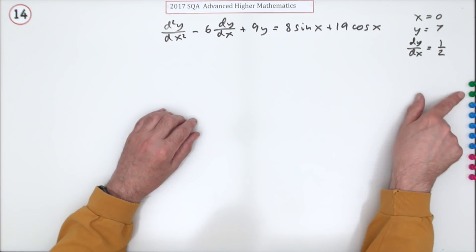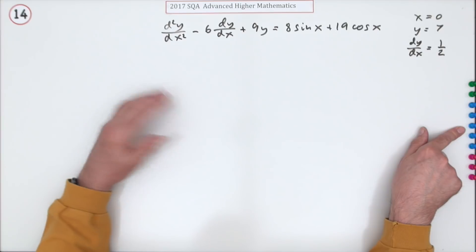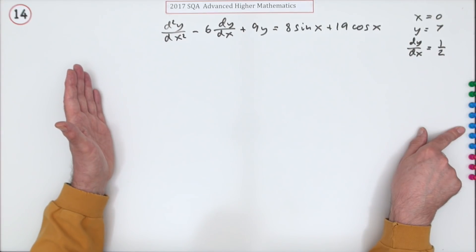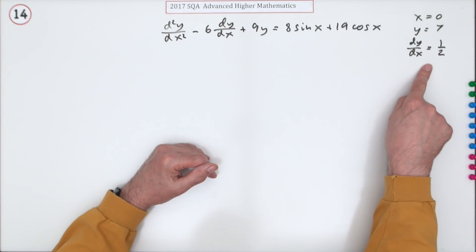First part is get the complementary function, the second part is get the particular integral. The two together make the general solution, and then use your initial conditions to get the particular solution.